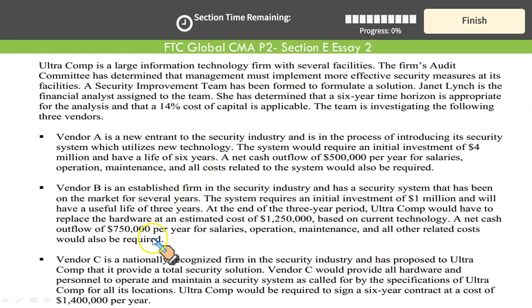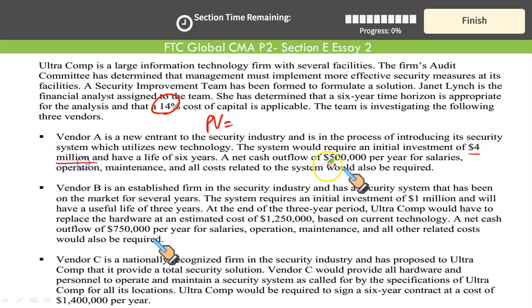Going for Vendor A — don't forget our discount rate is 14%. NPV for Vendor A: do not go for columnar form; as long as you can give clear computations in paragraph form, perfectly fine. So let's find out the present value of outflows for Vendor A. Vendor A requires $4 million right now — put this $4 million as-is, no discounting needed because this is what you pay right now. Then we have to make $500,000 payments.